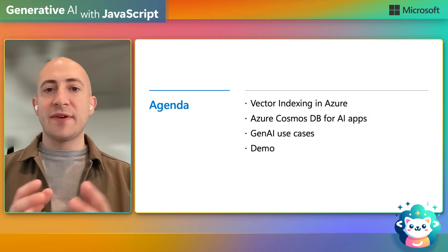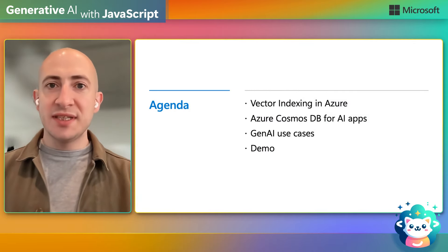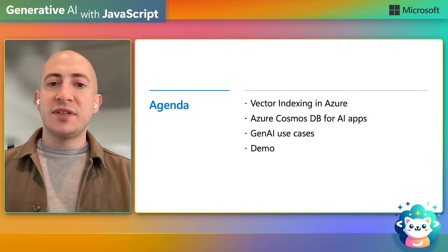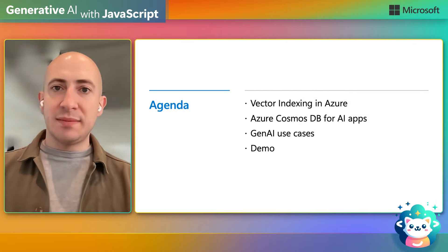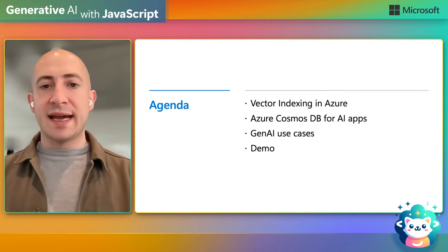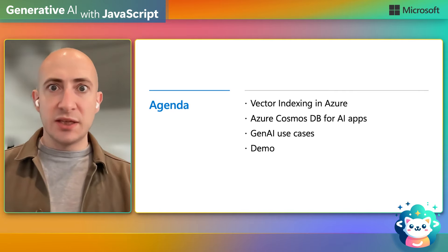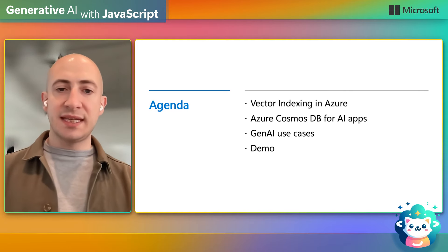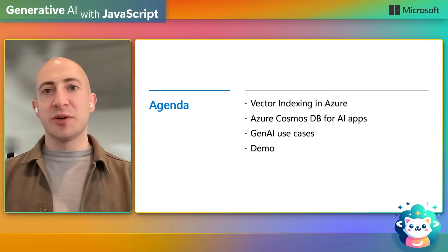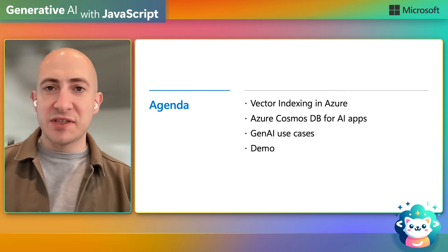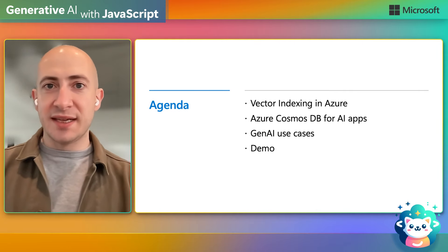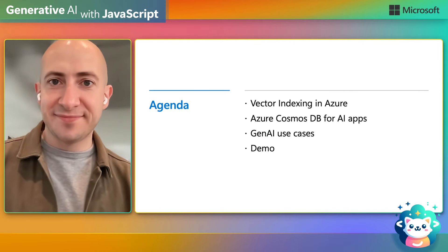We'll start out talking about vector indexing options in Azure, then we'll dive into Azure Cosmos DB for AI apps. We'll look at some generative AI use cases with Cosmos DB, then we'll go into that JavaScript demo that Johan has prepared for us.